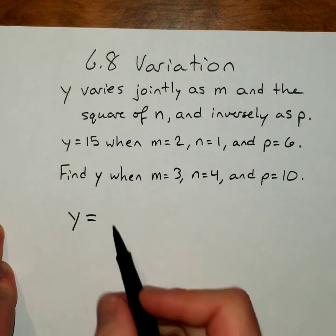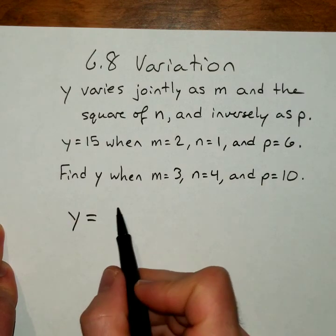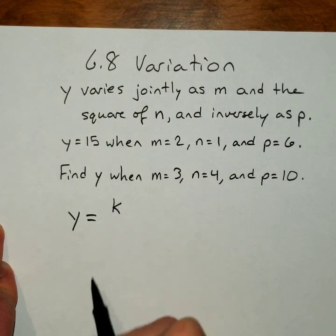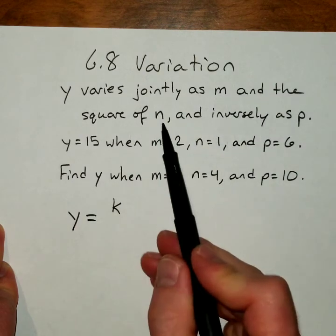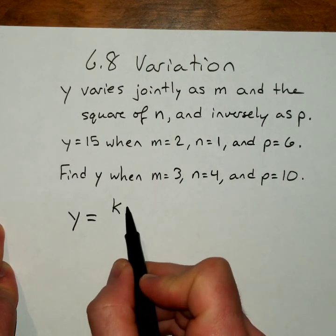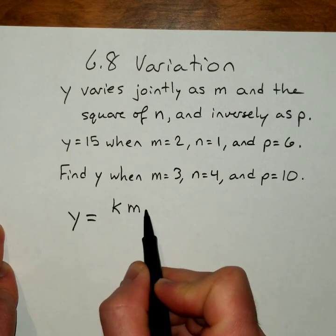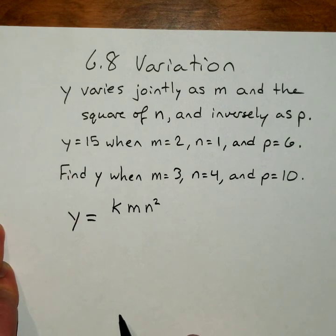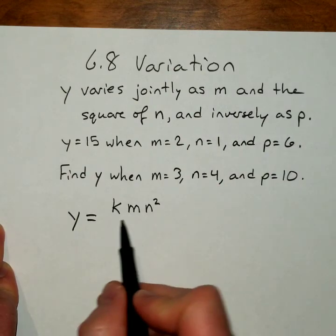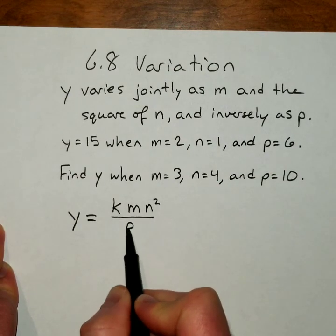Again, it's k. We need the constant. It varies jointly with m and the square of n. So that's a direct variation. So we multiply there. m and the square of n is n squared. But then it varies inversely as p. So we have to divide by the p.